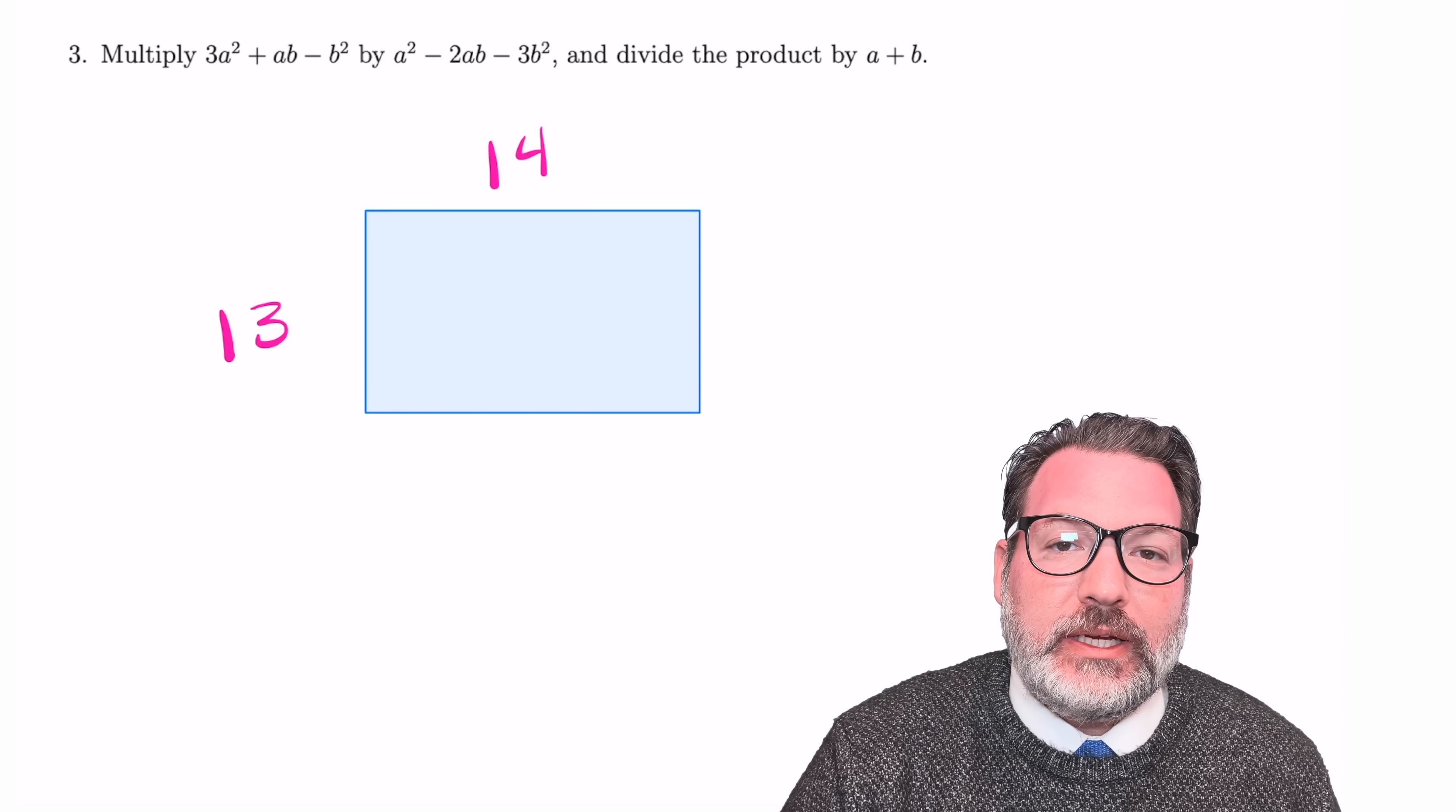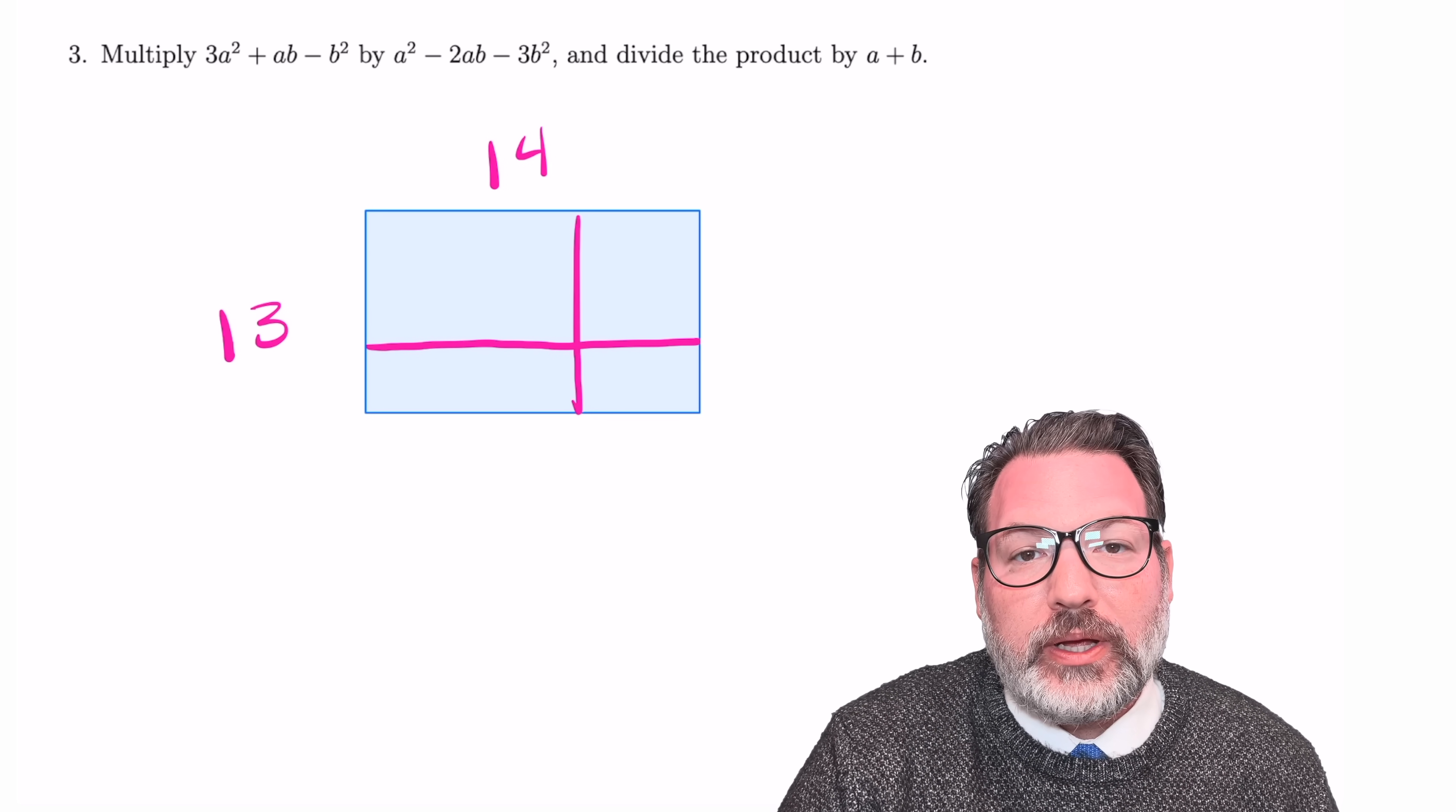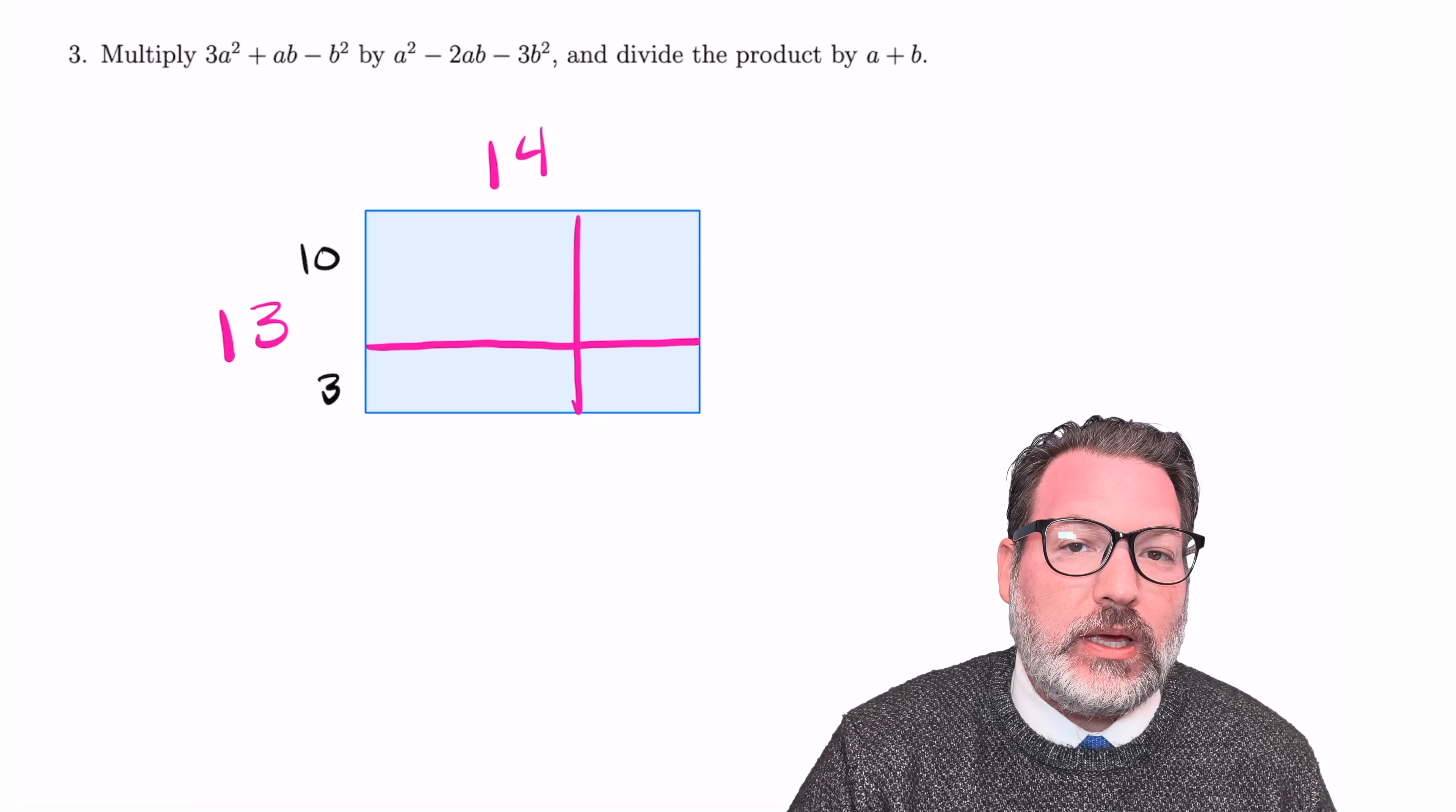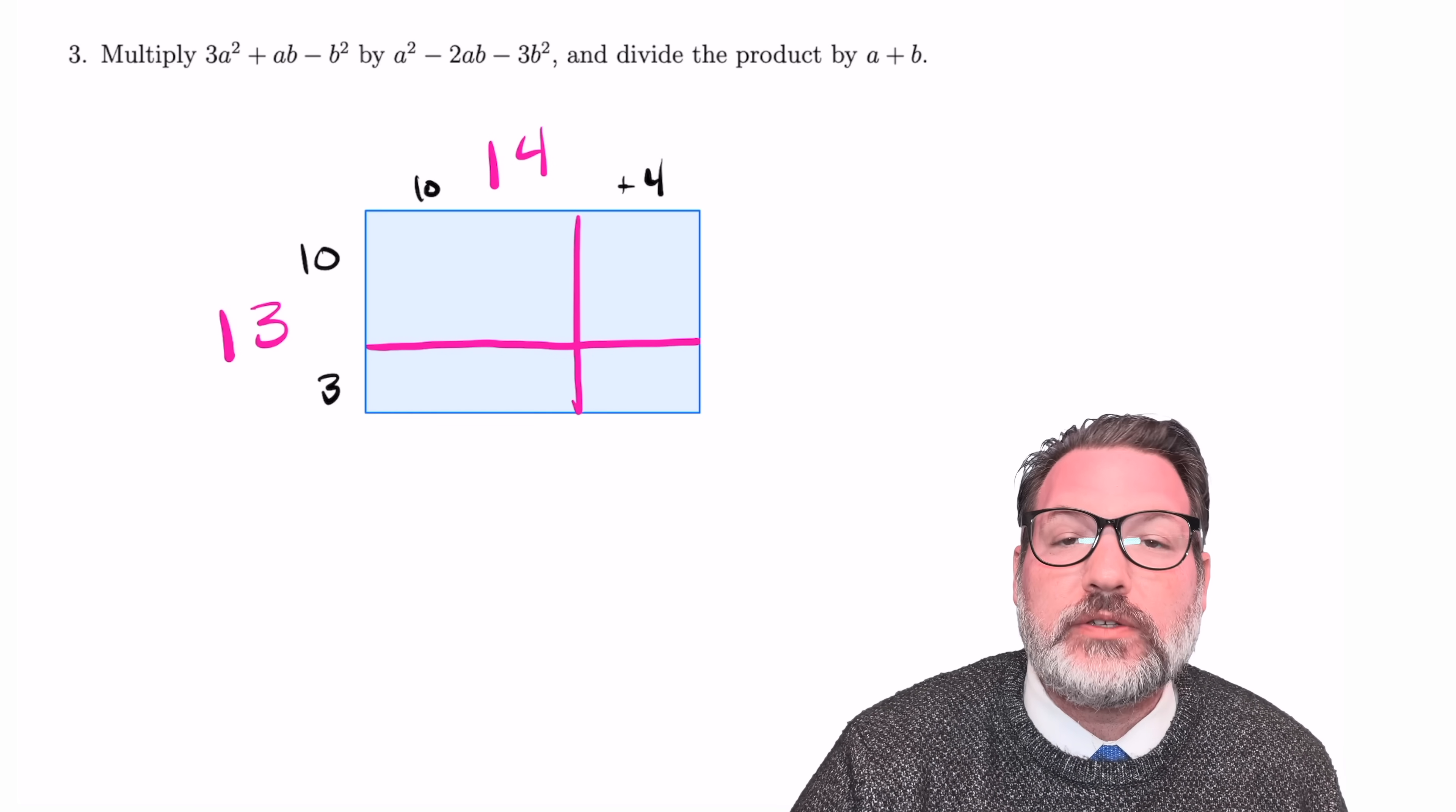So consider something like 13 times 14. One way a student might learn to multiply this is let's break 13 and 14 down into some different components. We can break them down basically by their digits. The 1 in a 13 is a 10s digit, right? And 13 indeed is a 10 plus a 3. Similarly, the 1 of the 14 is in the 10s place, the 4 of the 14 is in the 1s place, and another way to think about 14 is 10 plus 4.